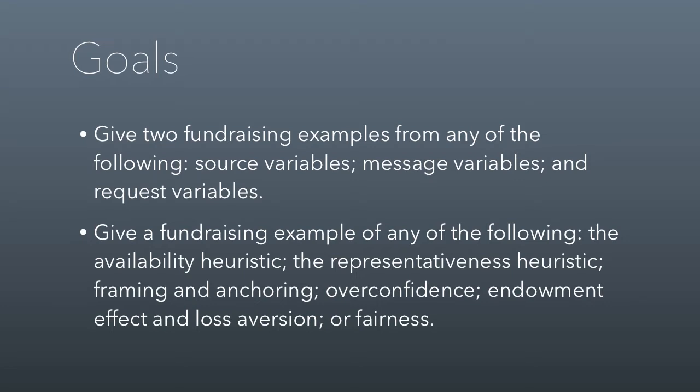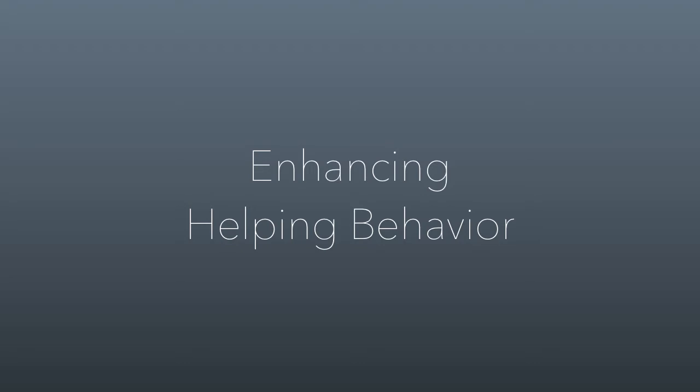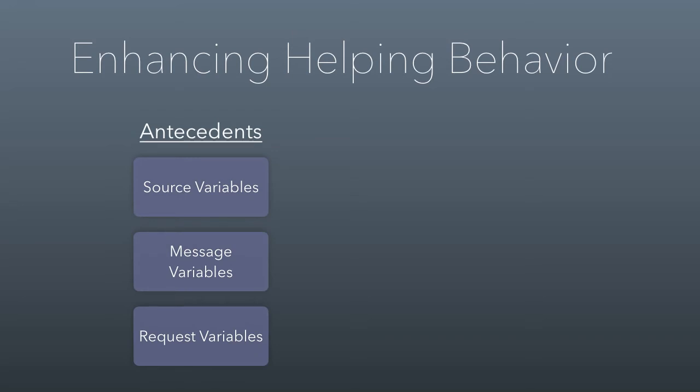There's a great article as part of the reading about enhancing helping behavior. It lays out a framework by which we can understand donor appeals. The idea is that as a nonprofit, you craft the antecedents, and these come in the form of source variables, message variables, and request variables. Essentially, this is the donor appeal that's sent out into the world. Ideally, you send your message out into the world and it produces helping behavior - you get people who want to help you and what you do.